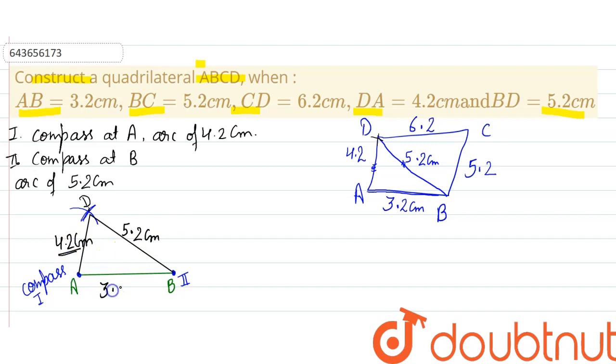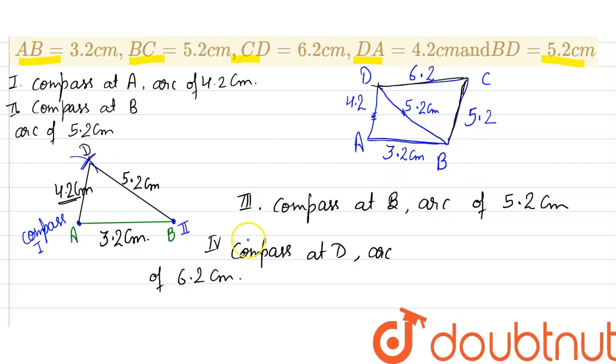We have taken this distance in the compass, so these line segments will be like this. AB initially we have drawn 3.2 centimeters. Further you can observe that CD is 6.2 and BC is 5.2. These two are also known. For your convenience, I have written the steps also.